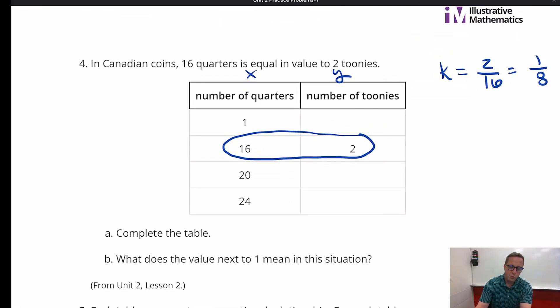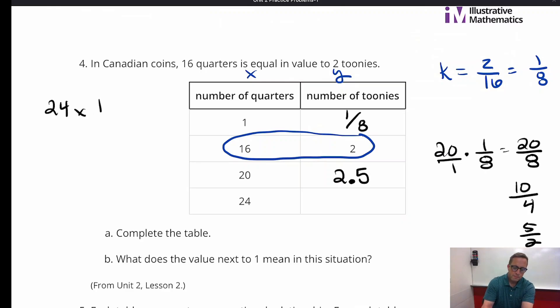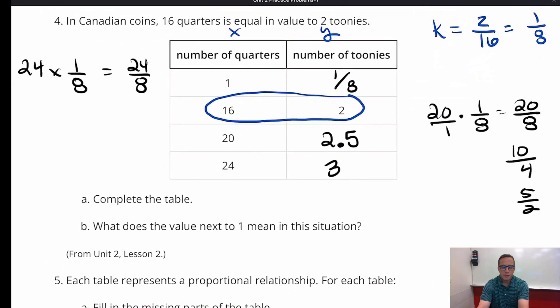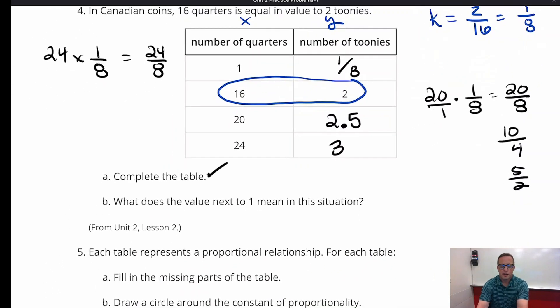Alright, let's finish the table. So we're going to do 1 times 1 eighth. 1 times 1 eighth is 1 eighth. Alright, 16 times 1 eighth is 2. That's already done. We're going to do 20 times 1 eighth, which is going to be 20 eighths, which is 10 fourths, which is 5 halves, which is 2 and a half. Or 2.5 if that makes more sense to you. And then we're going to do 24 times 1 eighth, which is 24 eighths, which is 3. Alright, so we finished that table.